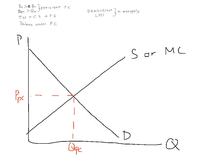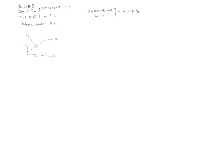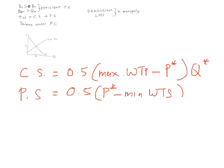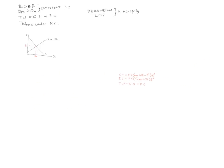Consumer surplus will be equal to 0.5 — because it's a triangle — multiplied by the maximum willingness to pay minus the minimum willingness to sell, multiplied by the equilibrium quantity. Producer surplus is again 0.5 times the equilibrium price minus the minimum willingness to sell, multiplied by equilibrium quantity. Adding them together gives total welfare, which is maximized under the competition outcome with no dead weight loss.